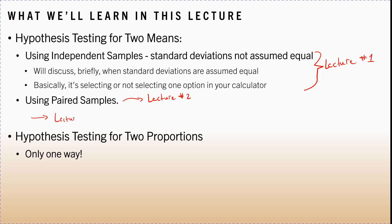Lecture number three will show the difference between independent samples and paired samples. Then we're going to talk about hypothesis testing for two proportions — and the good news is there's only one way for this — and I'll follow that up with a fourth lecture in this series.